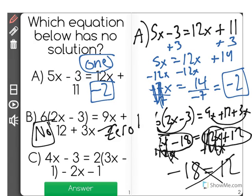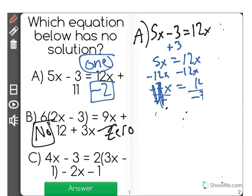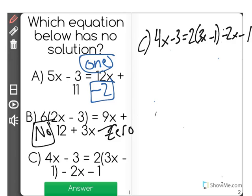And just for fun, let's go ahead and see what C would give us. C says 4x minus 3 equals 2 times 3x minus 1 minus 2x minus 1. So we're going to start by expanding. We know 4x minus 3 will remain.